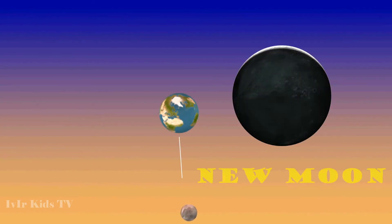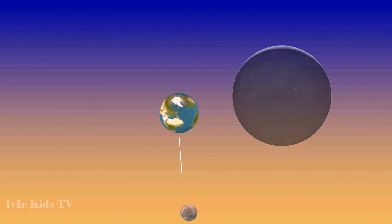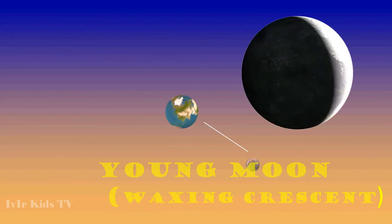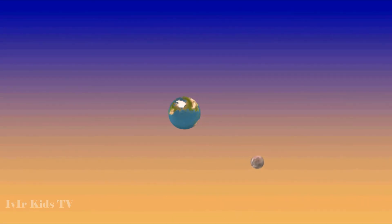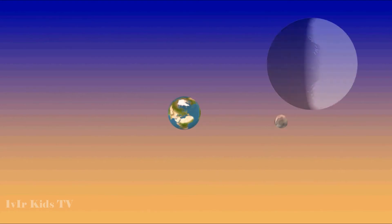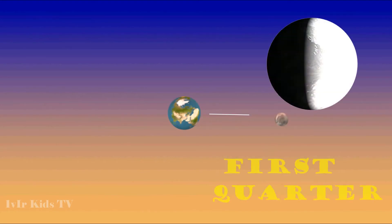New moon: a state when the moon is not visible. Young moon is the first appearance of the moon in the sky after the new moon, in the form of a narrow crescent. First quarter is the state when half of the moon is illuminated.